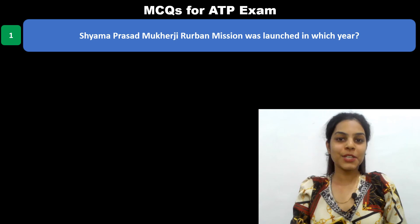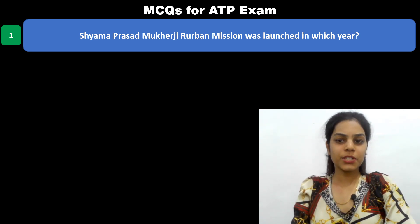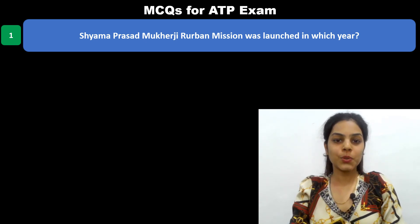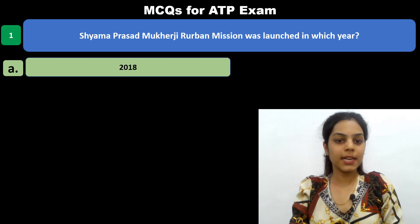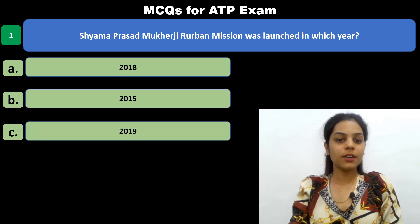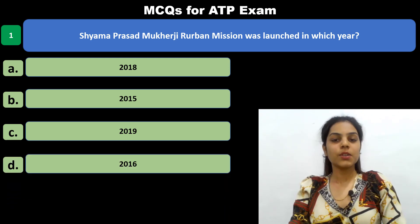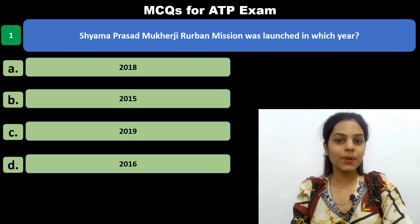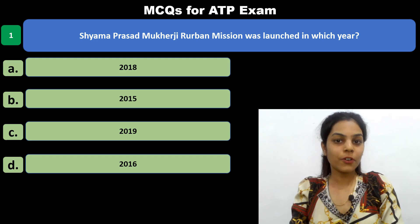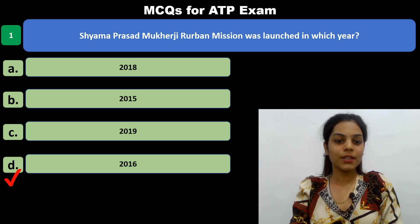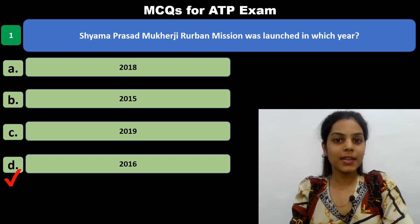The first MCQ is: Shama Prasad Mukherjee Re-Urban Mission was launched in which year? Options are: 2018, 2015, 2019, and 2016. If you have an answer, pause the video and comment. I will stop for 5 seconds — think about the answer. The answer is 2016.